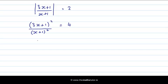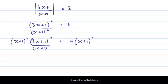Let's multiply both sides by this denominator. So we get 3x plus 1 squared over x plus 1 squared, and we multiply it by x plus 1 squared. And that's equal to 4 times x plus 1 squared. By multiplying both sides of an equation by the denominator, we always get rid of the denominator because it cancels out.